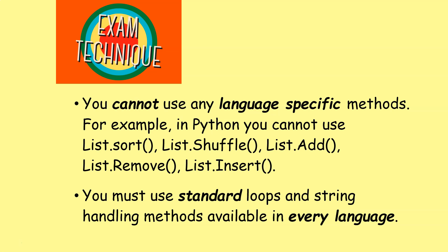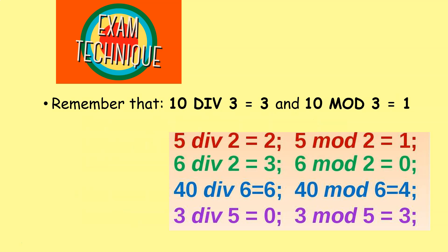You cannot use any language-specific methods. For example, in Python there are lots of great methods built into the language, especially with arrays or string handling — you can't use dot sort, dot shuffle, dot add, dot remove, etc. You have to use standard loops and string handling methods that are available in every language. Don't get your div and mod confused.